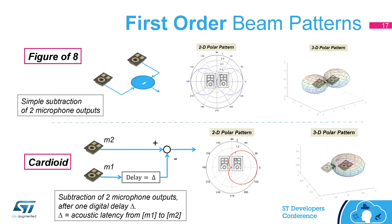Using an additional delay, we can implement what is called a cardioid polar pattern, which is very interesting because it means the two microphones are capable of listening in a single direction, eliminating unwanted noise from other directions. We have a library that is scalable where the simplest implementation of beamforming is really simple — it's what you find on page one of a beamforming book — a cardioid implementation by the book.